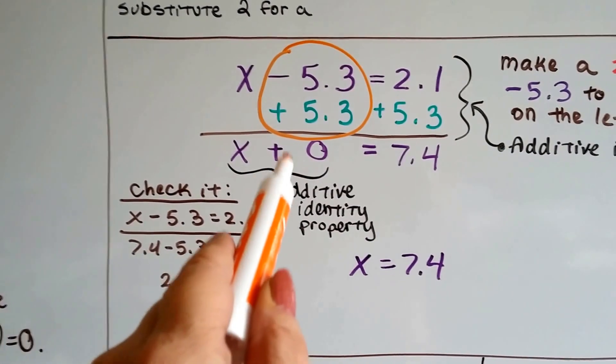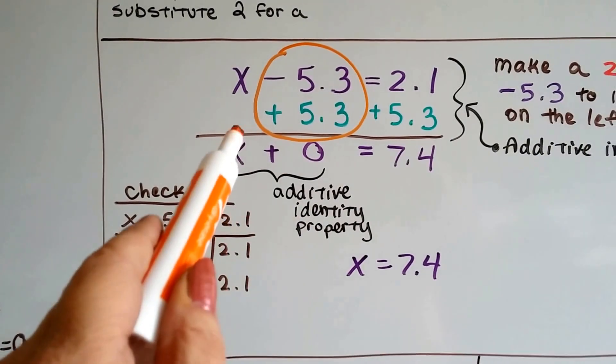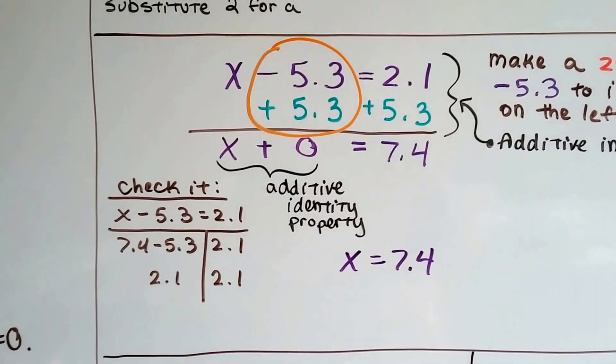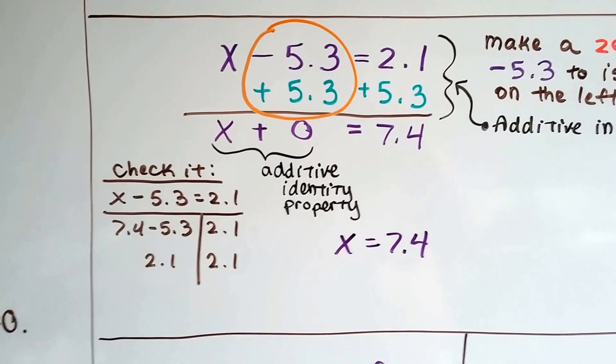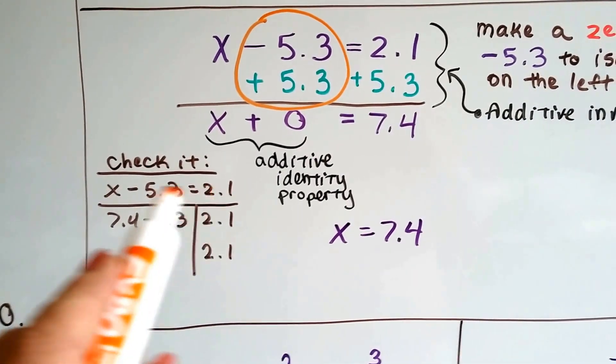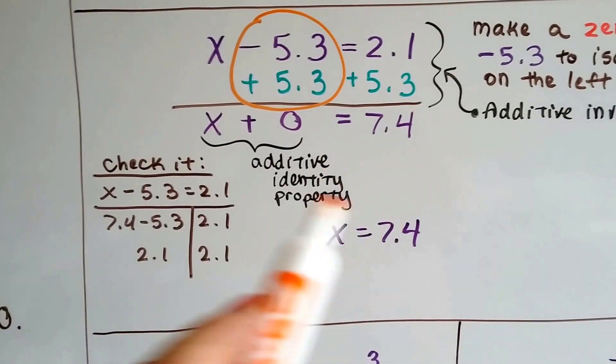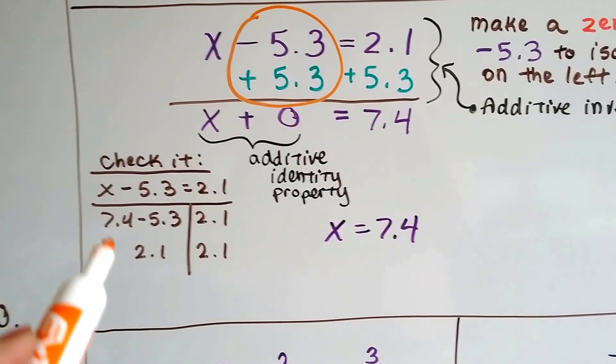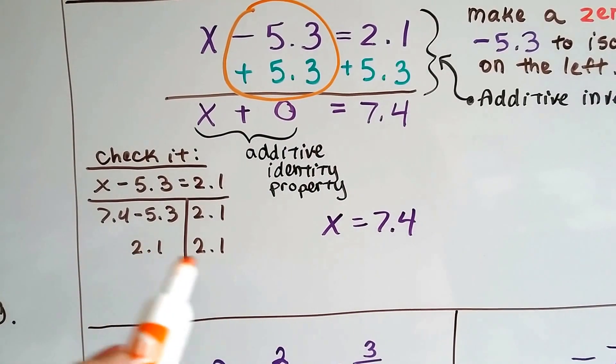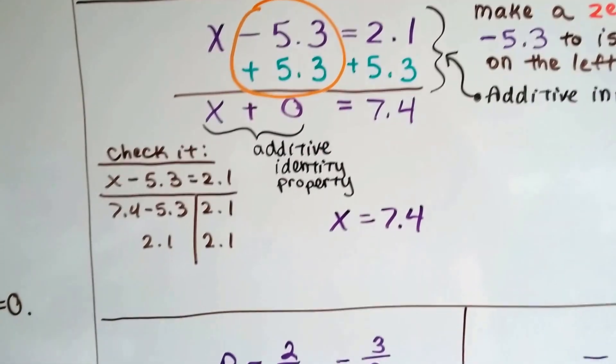And we don't even really need to add this zero. We can just say x equals 7.4 when we start going a little faster in this. So we check this by writing our equation, and we plug in the 7.4 where x is, and 7.4 minus 5.3 is 2.1 on both sides. So we know we did it correctly.